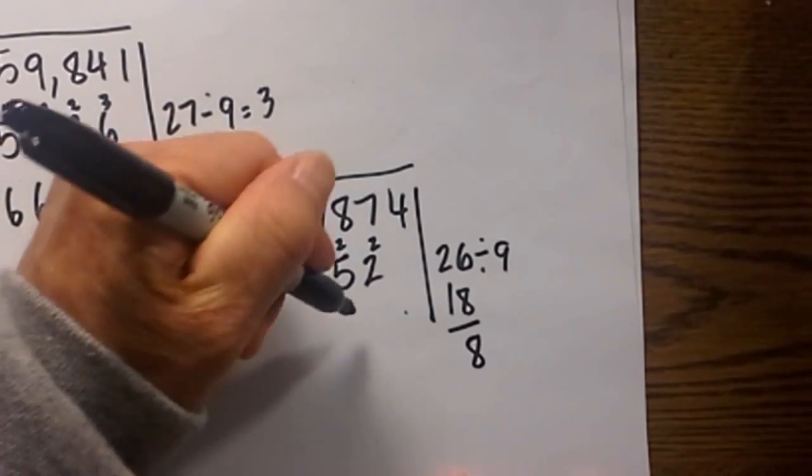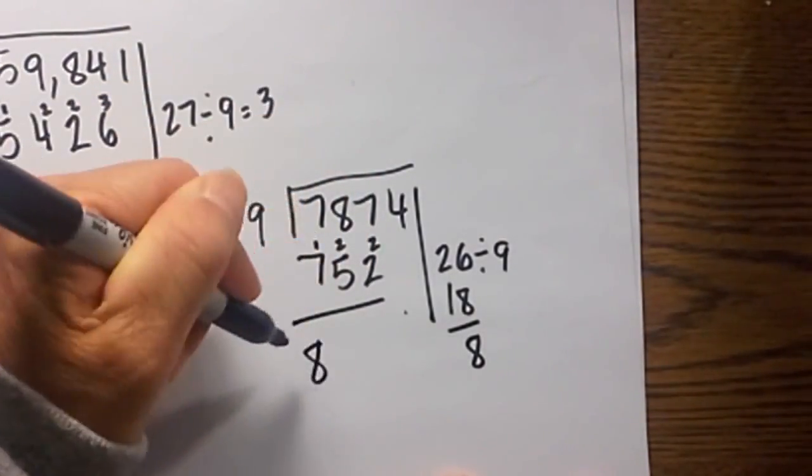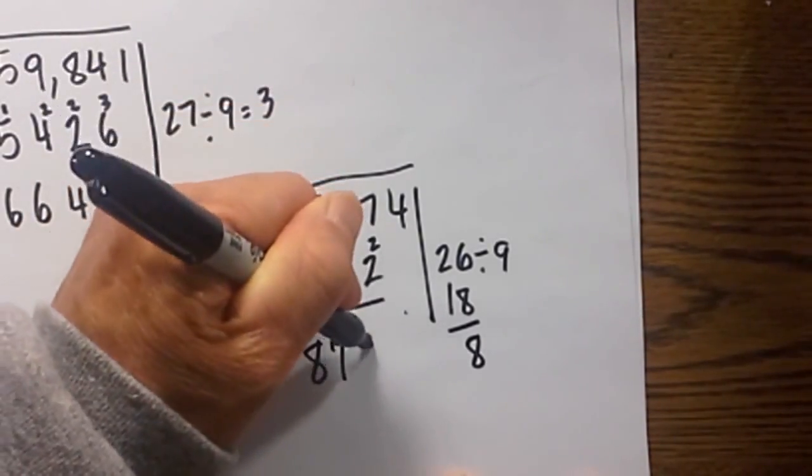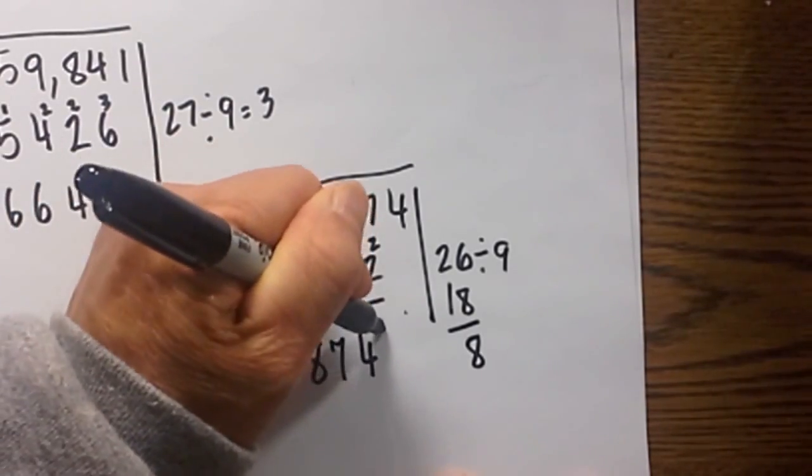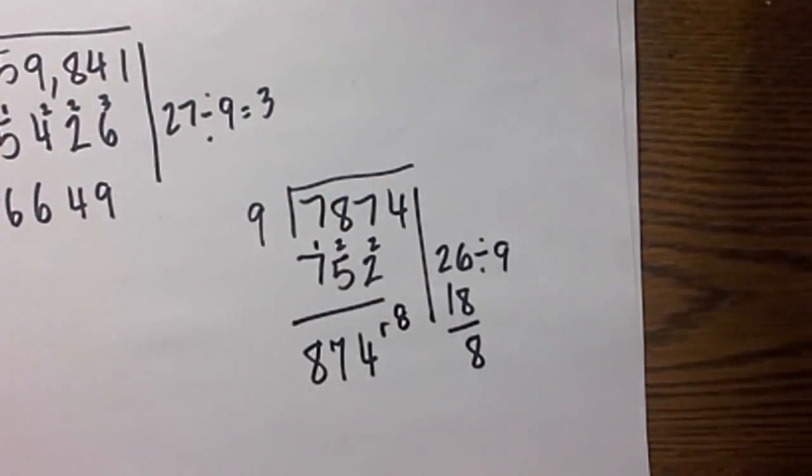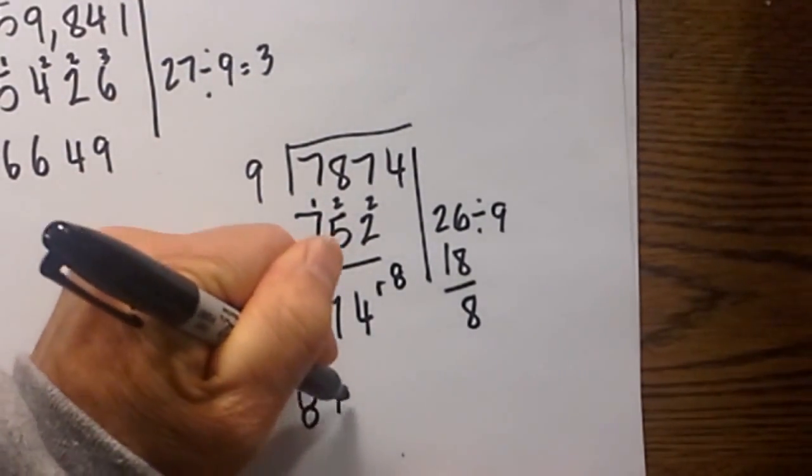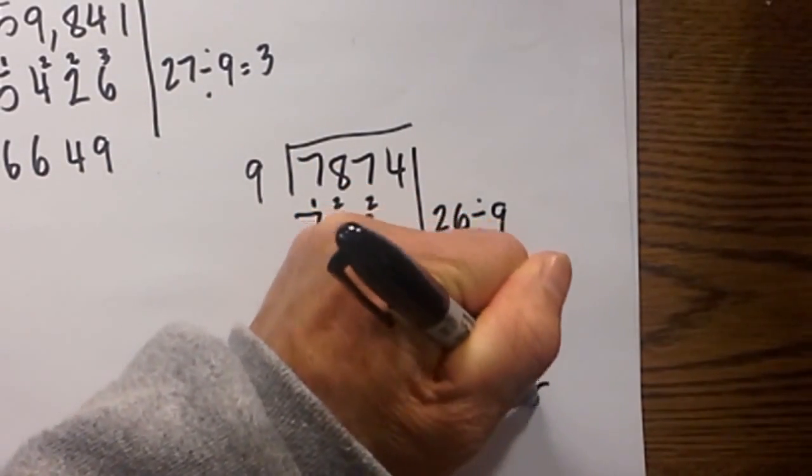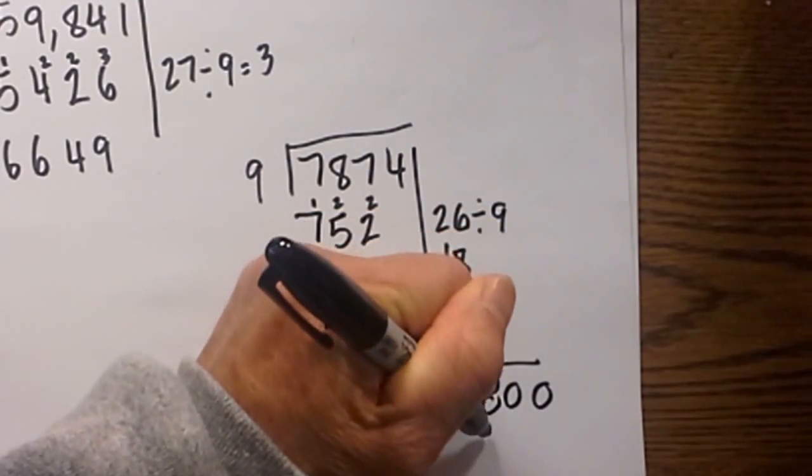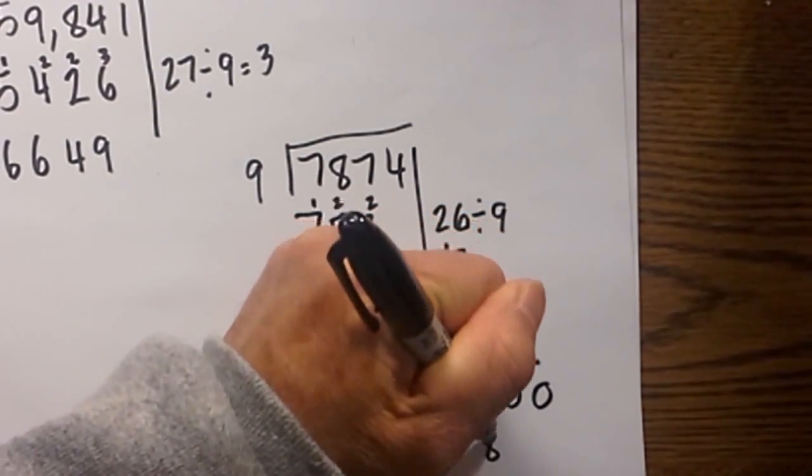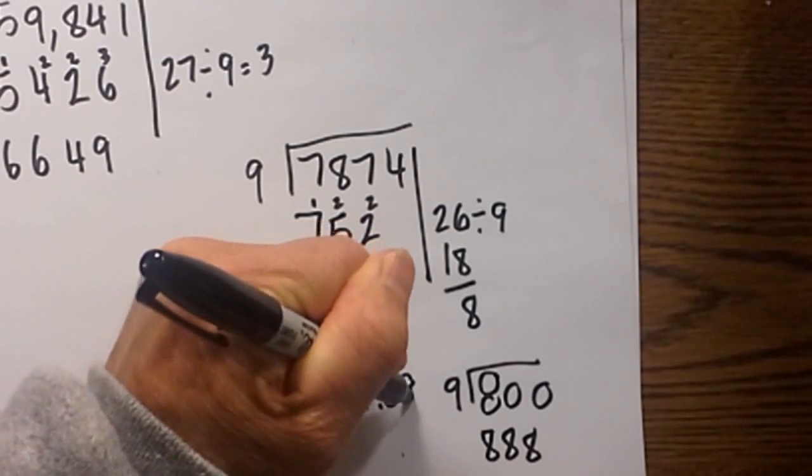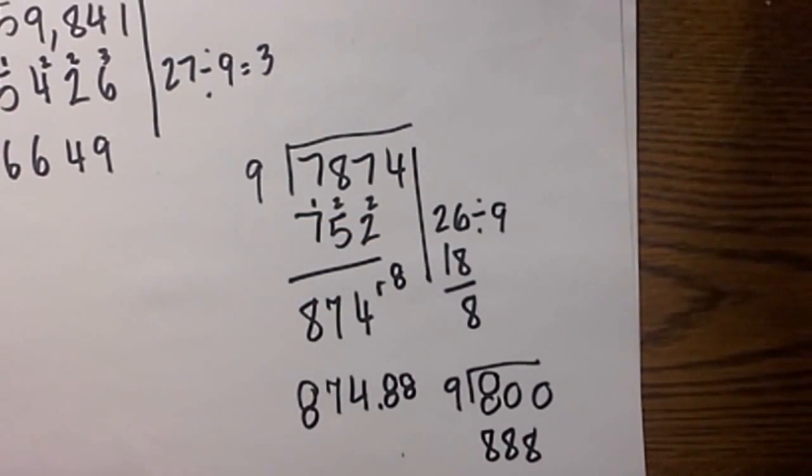So we have as an answer, let's total it up: 7 plus 1 is 8, 5 plus 2 is 7, 2 plus 2 is 4 with a remainder of 8. Again, if you don't like the remainder you can go 874 point and then just take 8, 0, 0 divided by 9. Bring down the 8, 8 plus 0 is 8, 8 plus 0 is 8, so we will go 874.88 for 2 decimal places.